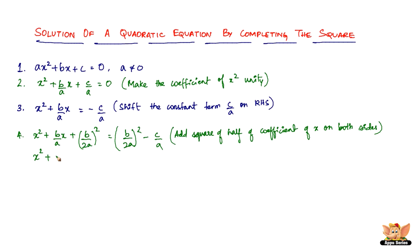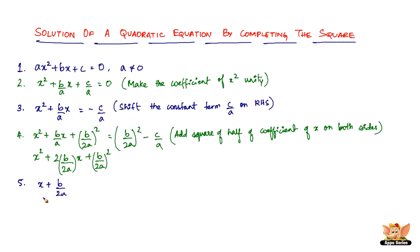So 2 times a times b, where b is b by 2a, the 2 cancels out and we get back the original term. This allows us to rewrite the left side as a perfect square. You will see why in the next step.